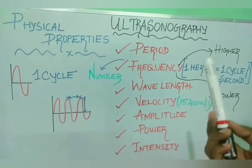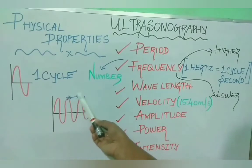Next is wavelength. Wavelength is the distance between two successive crests. This is one crest, this is one crest, this is one crest. It's the distance between two successive crests.